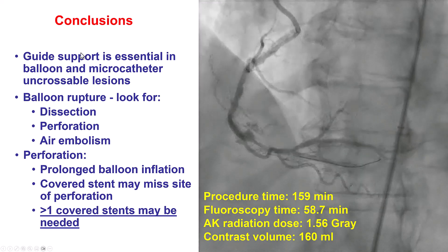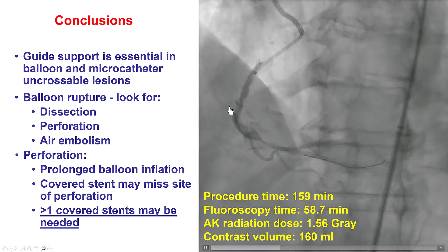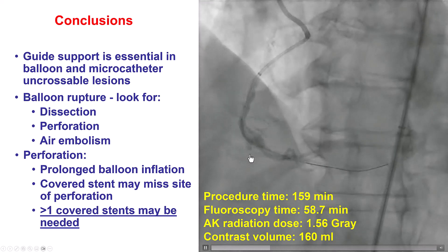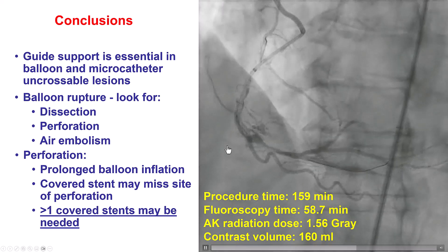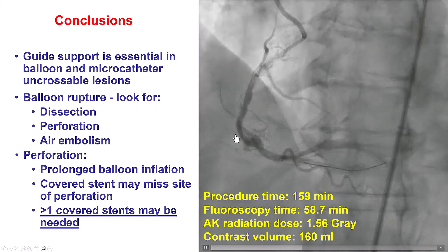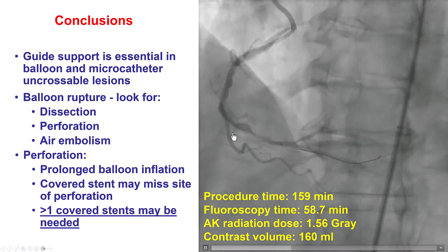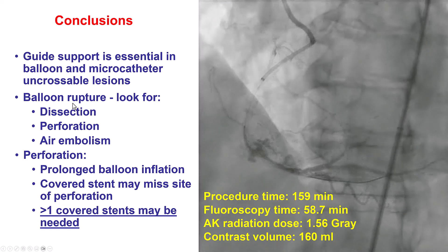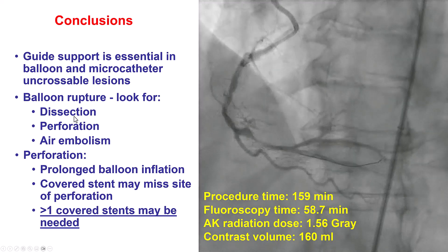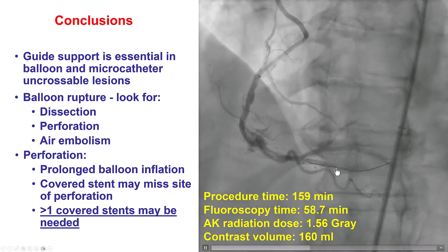Multiple lessons from this case. First, guide support is critical for equipment delivery, especially through tortuosity and heavily calcified lesions. We did have a balloon undilatable lesion, and even though the NC balloon expanded, it ruptured, causing a perforation and dissection. So every time a balloon ruptures, it is important to immediately look for any complication — dissection, perforation, or sometimes air embolism. You want to detect this immediately so that if there is a perforation, one can inflate another balloon to prevent bleeding into the pericardium and reduce the risk of tamponade.